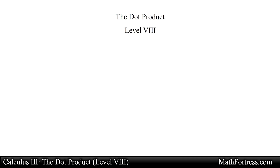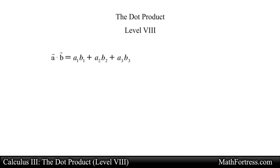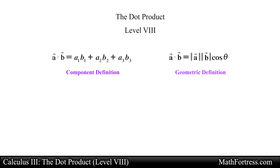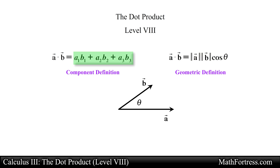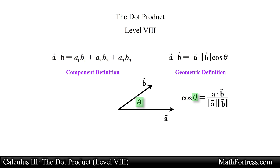The dot product, level 8. In this video we will go over our first application that makes use of the dot product. Recall that we covered two different forms of the dot product: the component definition and the geometric definition. Having these two forms opens the possibility of using basic algebraic operations, as in the component definition, to calculate geometric quantities like lengths and angles via the geometric definition. In the previous video we used this to find the angle between two vectors by rearranging the geometric definition.